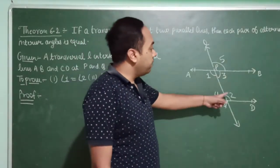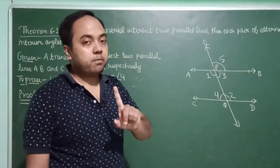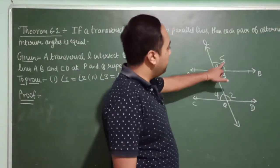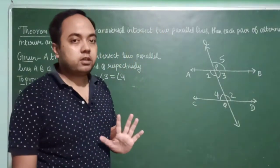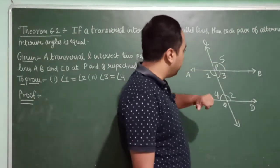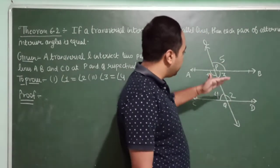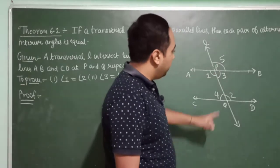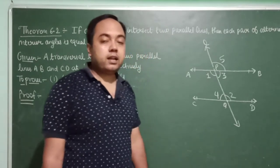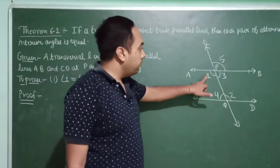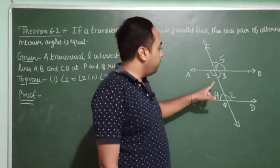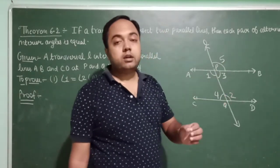We need to prove angle 1 equal to angle 2. We can say that angle 1 is equal to angle 5, because AB is parallel to CD and transversal L is intersecting AB and CD. We can also say that angle 2 is equal to angle 5 by the corresponding angle axiom. Then from these two equations, angle 1 is equal to angle 2.